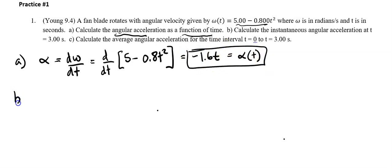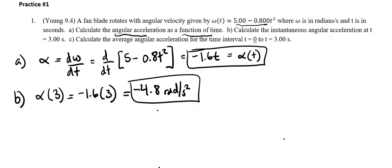Let's go ahead and go on to part B. We want the instantaneous angular acceleration at t = 3 seconds. Instantaneous, that's at a split time. We found an equation for instantaneous acceleration. Let's just plug that in. So it's going to be alpha(3) equals -1.6 times 3, and that is -4.8 radians per second squared. Let's go ahead and go on to part C.